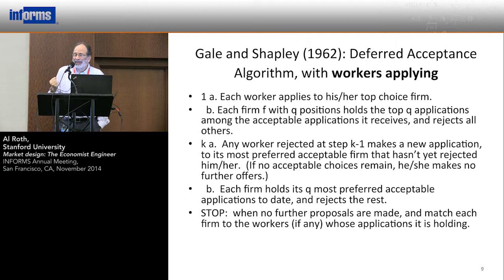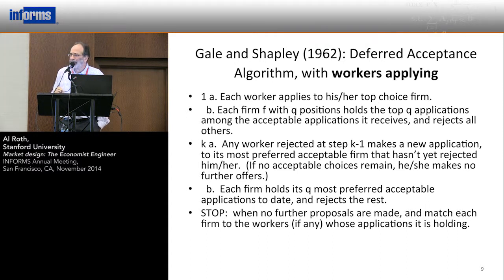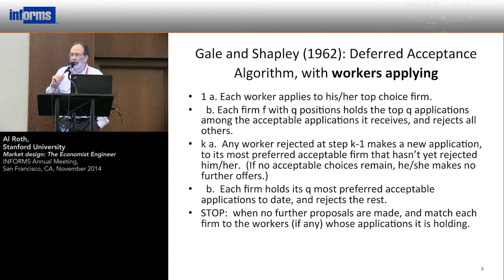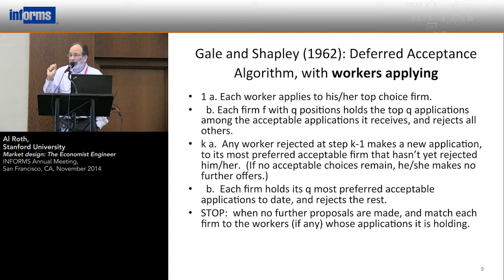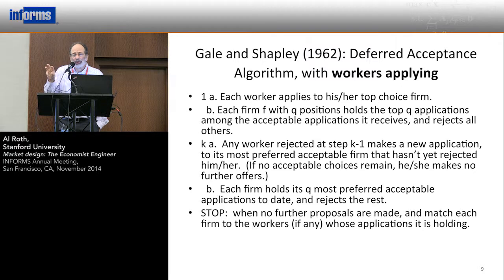Every worker who's just gotten a rejection applies to their next choice. Every firm that's just gotten new applications ranks them without prejudice about when they applied — just in order from their rank list — keeps the five best if they have five positions, rejects the rest. This algorithm continues until no more rejections are issued, which happens in finite time because there are only a finite number of people and no worker ever applies twice to the same firm. When the algorithm stops, the matches are made — every hospital residency program is matched to those applications it's holding.